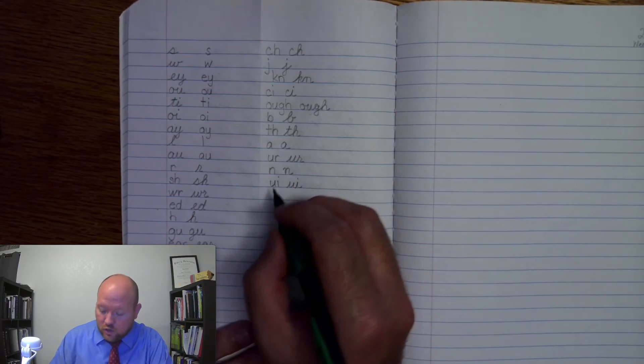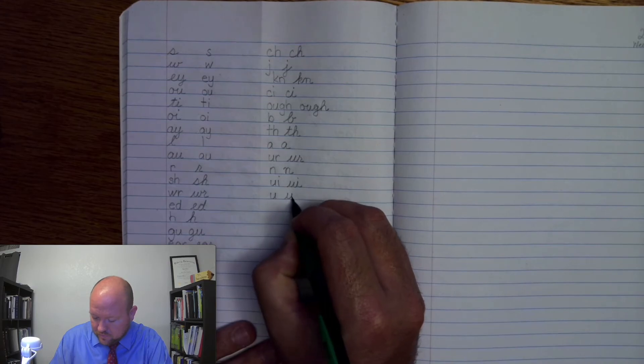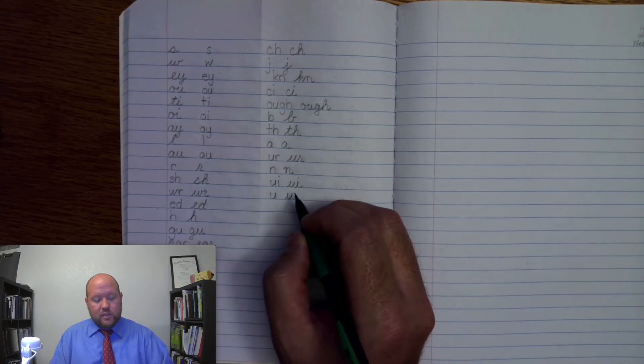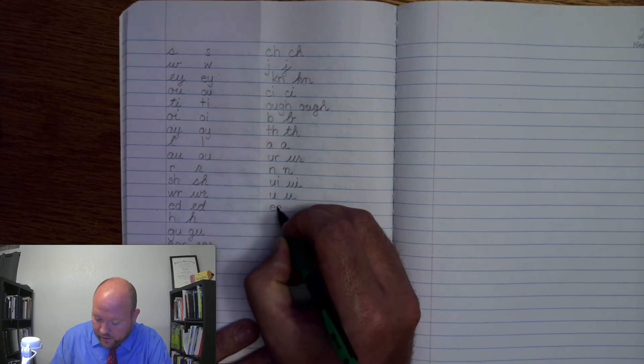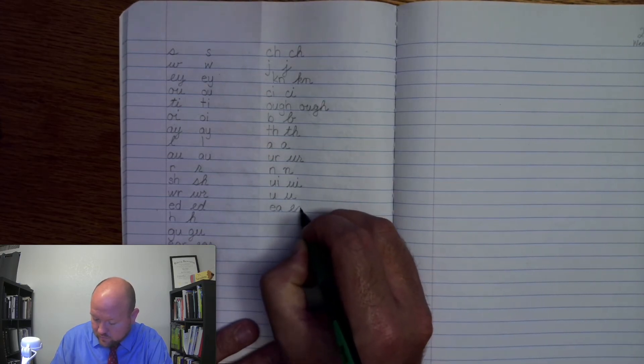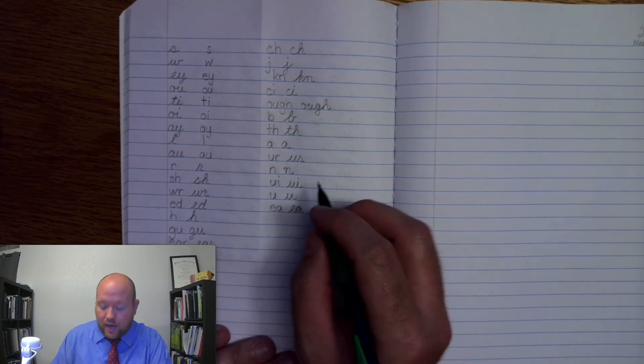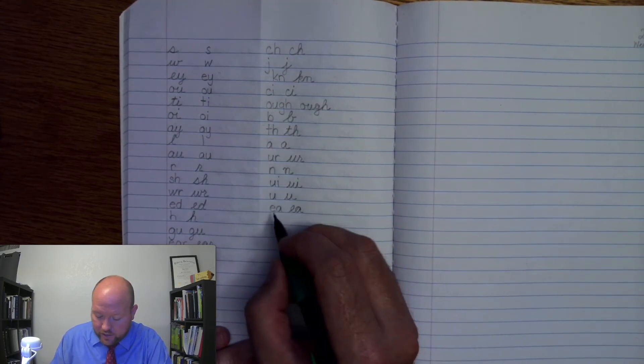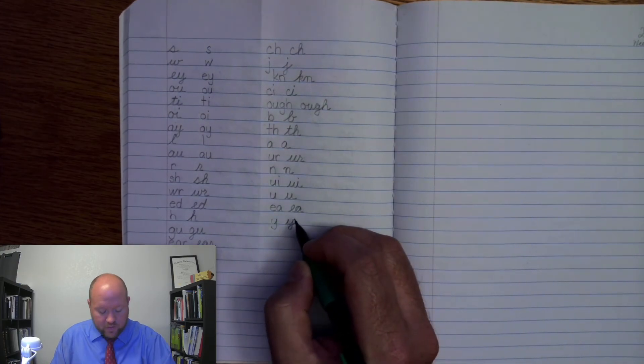Next one. U, u, u. U, u, u. Next one. E, e, ay. E, e, ay. Next one. Y, i, ay. Y, i, ay.